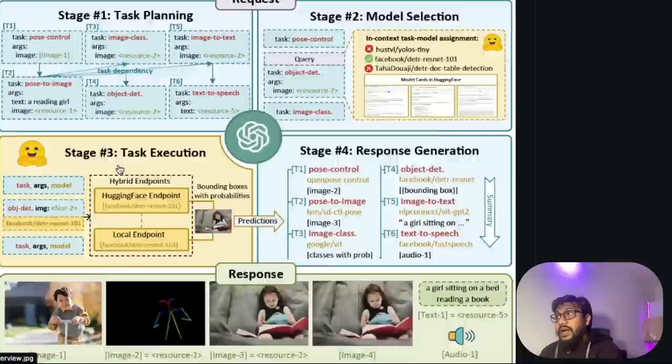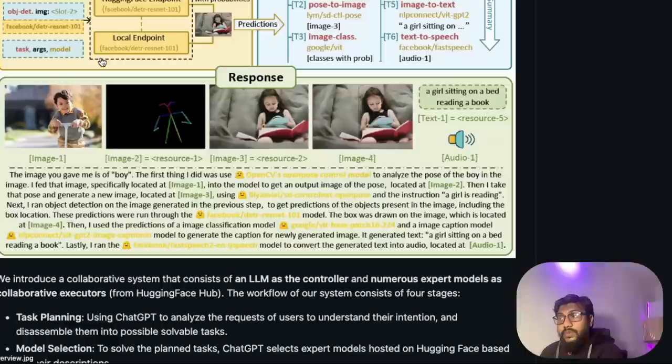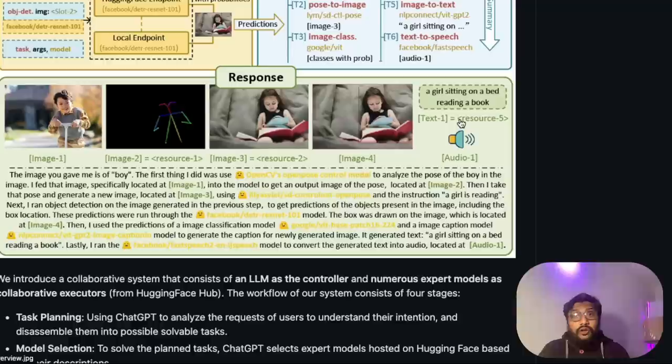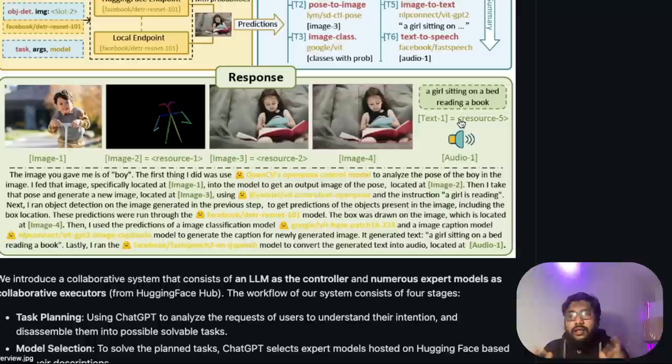This image is given to the system Jarvis. So first, the system takes the pose of this boy and tries to generate an image where the girl is reading a book. And then finally, it creates an audio output where it says a girl sitting on a bed reading a book. It might look slightly simple, but this is a complicated system that talks to a lot of different things. And it also opens a completely new area.